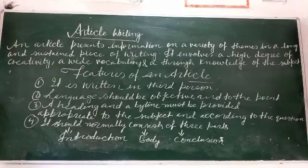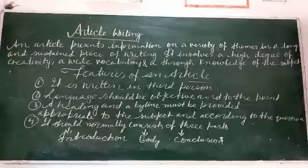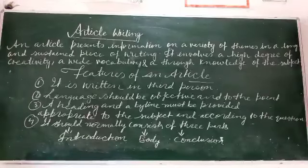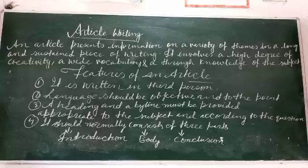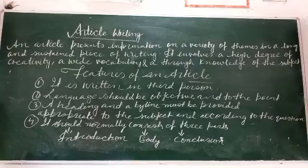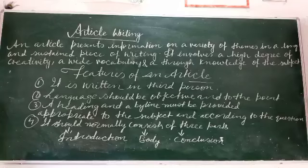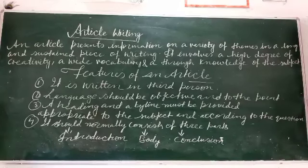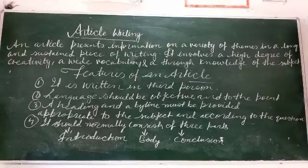Features of an article: It is written in third person. Language should be objective and to the point. A heading and a byline must be provided, appropriate to the subject and according to the question. It should normally consist of three parts: Introduction, Body, and Conclusion.